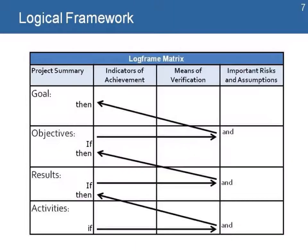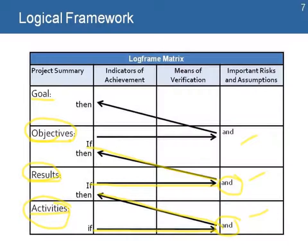Let's see how that works with our matrix. We complete the matrix by describing the goal, the objectives, the results, and the activities. We also list our risks and assumptions. The logic follows as this: if we do the activity and the assumption holds, then we are able to achieve the result. If we achieve the result and the assumption holds, then we achieve the objectives. If we achieve the objectives and the assumptions hold, then we achieve the goal of the project. Notice that at this level there are no risks or assumptions because we are not moving higher in the hierarchy.